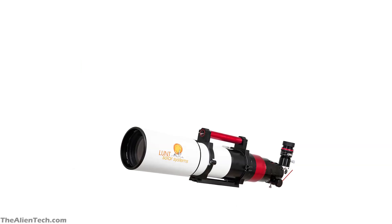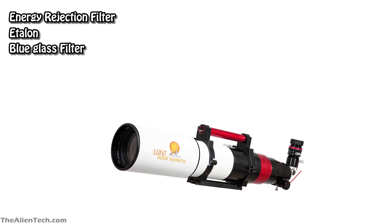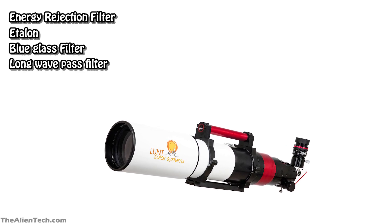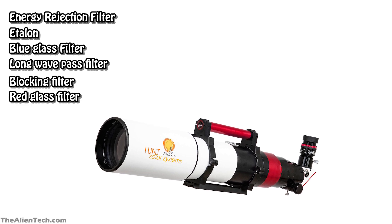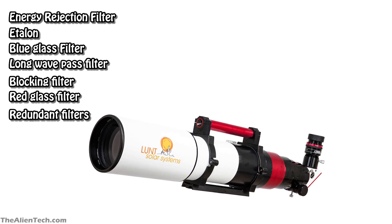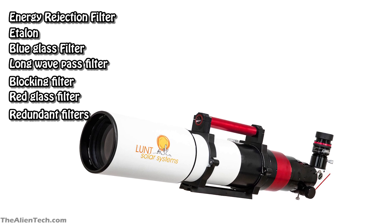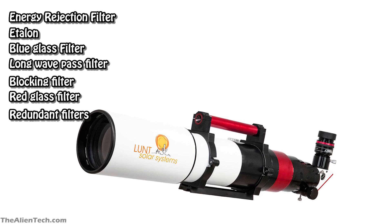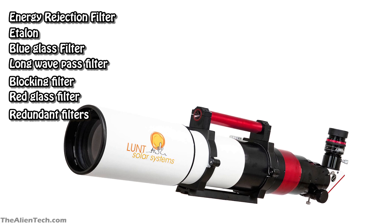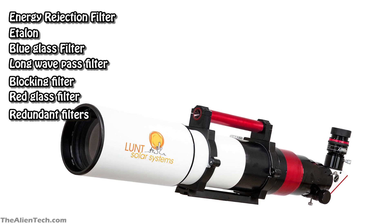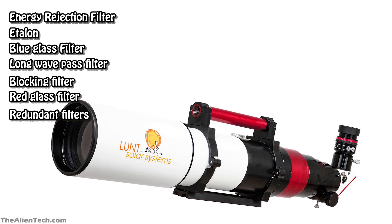A good solar telescope has an energy rejection filter, etalon, blue glass filter, long-wave pass filter, blocking filter, red glass filter, and redundant filters. All of these filters are used to filter out the infrared and ultraviolet rays. As mentioned in the beginning, the sun can cause permanent damage to your eyes, so all these various filters are for the safety of the observer. This is the reason solar telescopes are quite expensive.